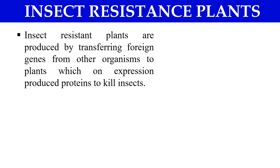Insect resistance plants are simply plants which are made resistant against a particular insect by the transfer of certain foreign genes. These genes make some kind of toxin that ultimately kills the insect if it feeds on that particular transgenic plant.